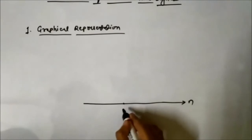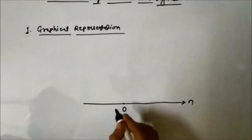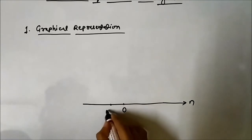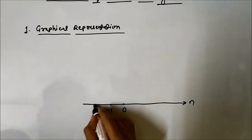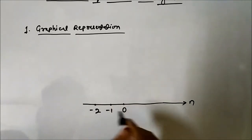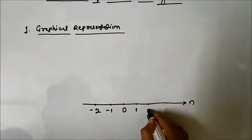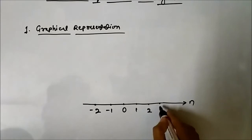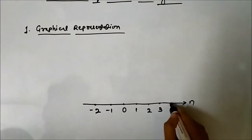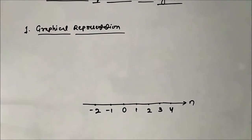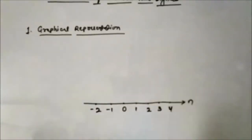We mark the origin at 0, then define the other instances: minus 1, minus 2 to the left, and 1, 2, 3, 4 and so on to the right. Then we define the magnitude of the signal samples at each specific instance.